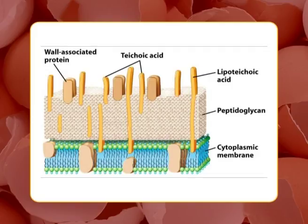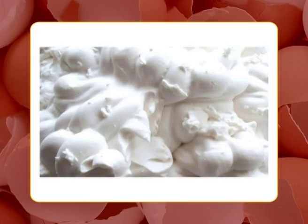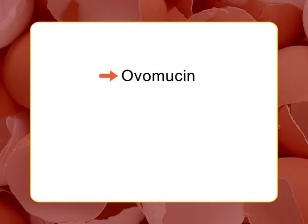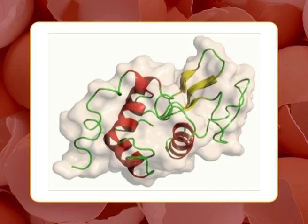The fourth proteins are ovoglobulins G2 and G3, which are good foam builders. Fifth is ovomucin, a glycoprotein separated into low and high carbohydrate fractions. It forms fibrillar structures contributing to a rise in viscosity of albumin, particularly of thick egg white where it occurs in four-fold higher concentration than in thin albumin. Ovomucin forms a water-insoluble complex with lysozyme, whose dissociation is pH-dependent, likely related to the thinning of egg white during storage.